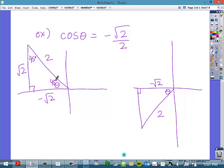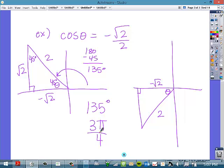Which would make this 180 minus 45, which is 135. So, 135 degrees, or in radians, that would be 3π over 4. Over here, this would be 180 plus 45, which would be 225, or in radians, 5π over 4.